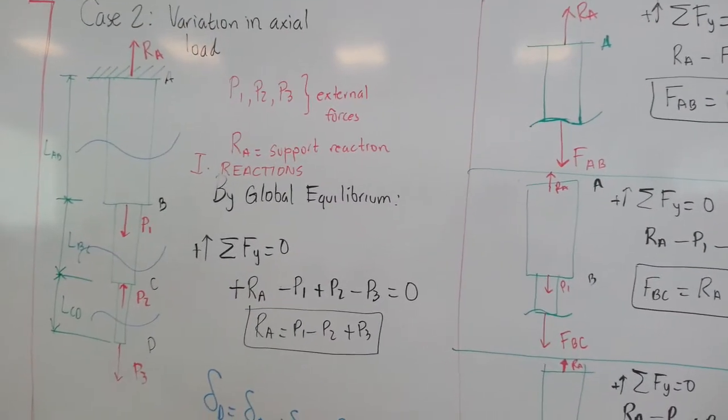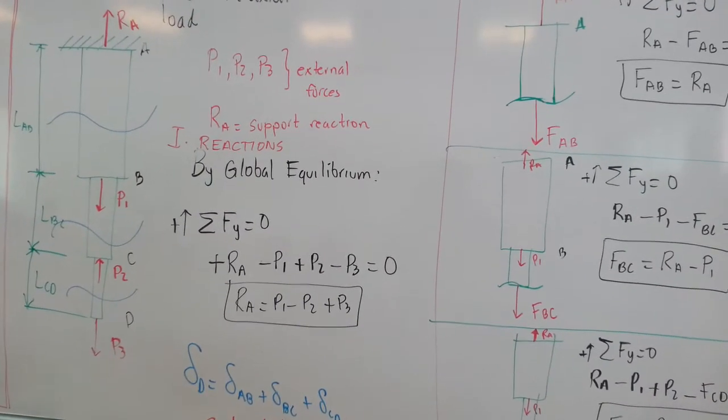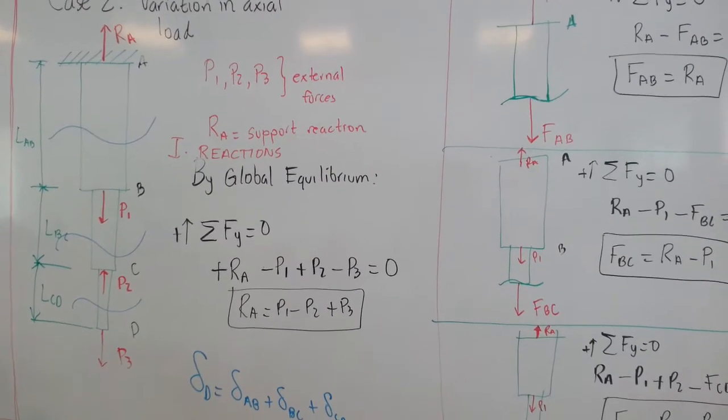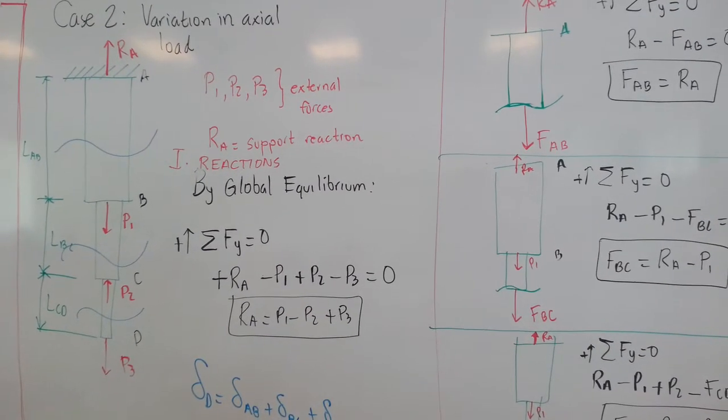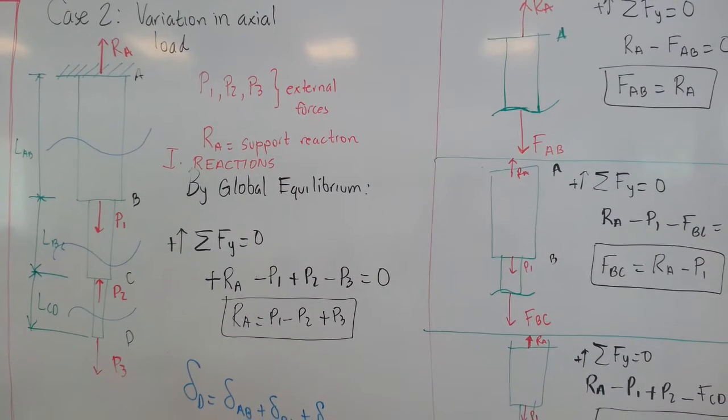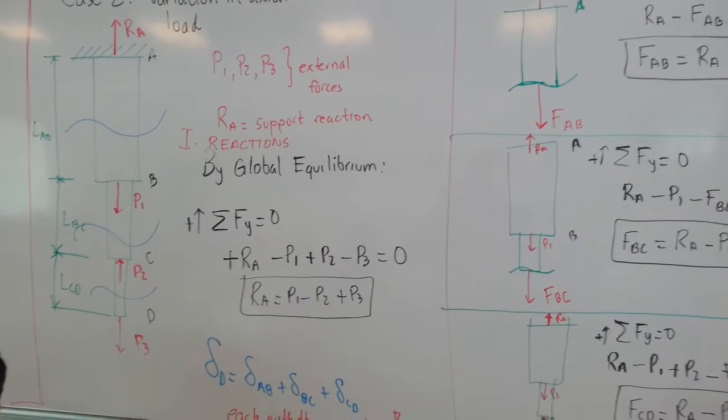Case two, we have a variation in the axial load as well as the variation in the cross section. And you can see that in this problem, this example, we have the appearance of a reaction force. The first thing you have to do is to calculate this reaction by using global equilibrium, expressed there on the board.